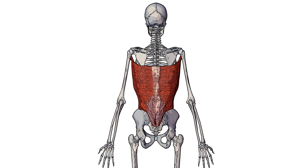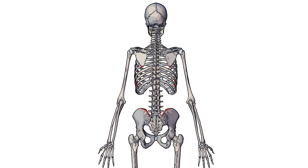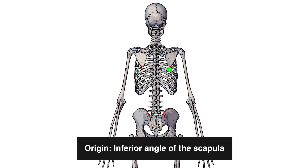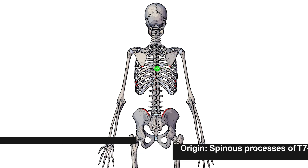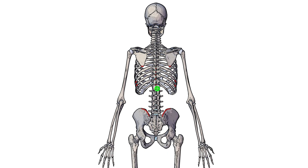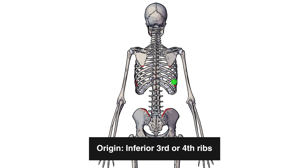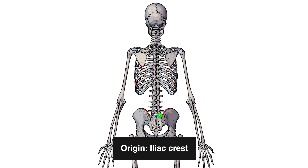Here we can see a posterior view of the skeleton and we can see the latissimus dorsi in isolation. Let's take a look at its origins. Highlighted here in red are the origins of the latissimus dorsi — that's on the inferior angle of the scapula, the spinous processes, the vertebrae T7 to T12, the inferior third or fourth rib, and then also on the hip here, specifically on the iliac crest.